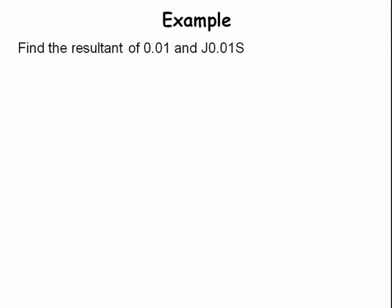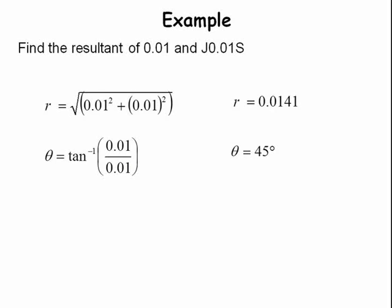So, we must find the length of the hypotenuse of the right triangle with sides .01 and J .01. We now plug the numbers into the square root and the sum of the squares. That gives us an admittance of .0141. Next, we find the arc tangent of the right triangle with sides .01 and J .01, which is 45 degrees.